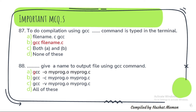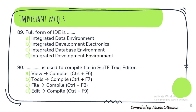Question 88: What will give a name to the output file using the GCC command? The correct option is option A. Question 89: Full form of IDE — Integrated Development Environment. Question 90: What is used to compile a file in Skite text editor? The correct option is Tools > Compile, or you can use Ctrl+F7.